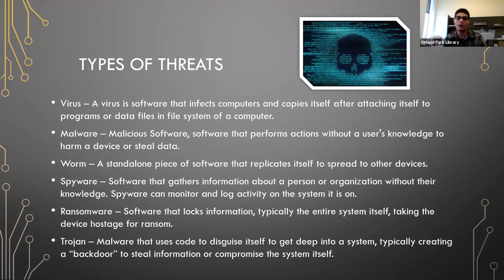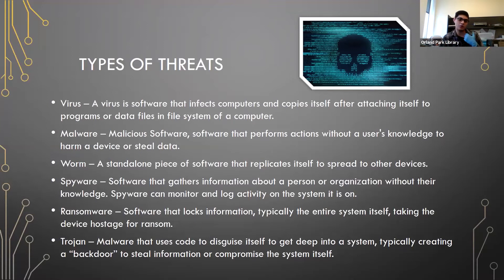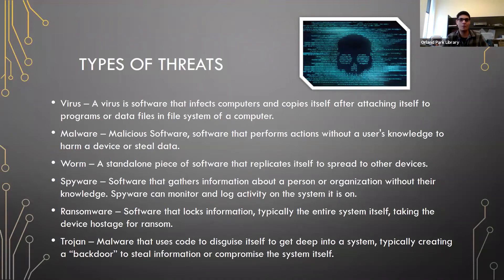The Trojan — most people are familiar with it — is malware that uses code to disguise itself to get deep into a system, typically creating a backdoor to steal information or compromise the system. A Trojan usually works in tandem with other threats on that list. Just like a Trojan horse, it hides itself — for example on a Windows laptop it might disguise itself as a system file that Windows needs. Windows lets it into the file system and it turns out to be a virus, possibly even ransomware.